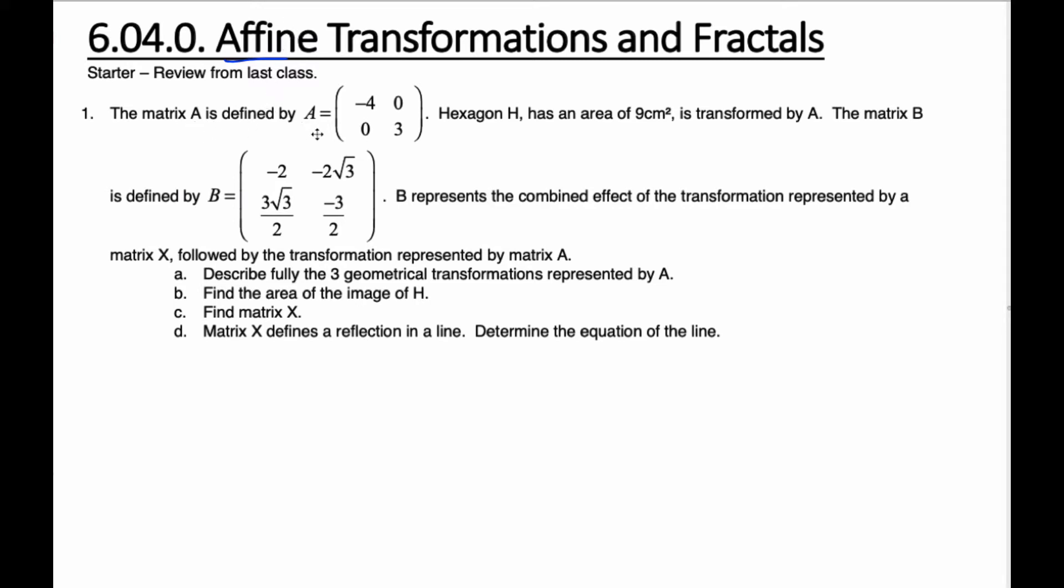We have matrix A as such. Hexagon H has an area of 9, and we don't know what hexagon H is or anything about it other than the area, but it's transformed by A. We also know matrix B is defined by this ugly matrix, and B represents the combined effect of the transformation represented by matrix X, followed by transformation represented by matrix A.